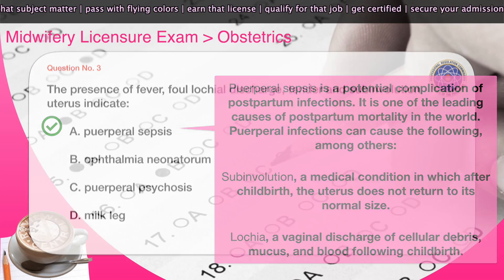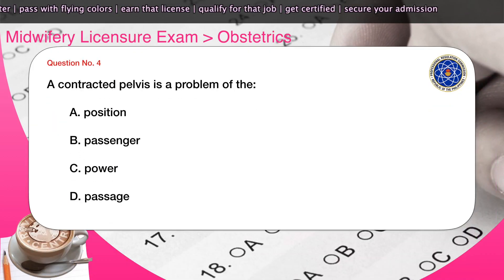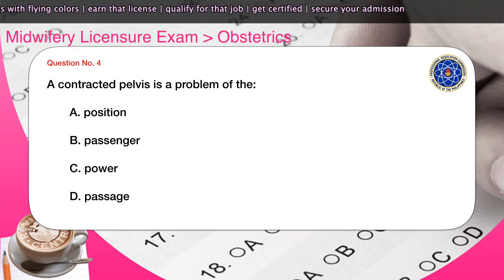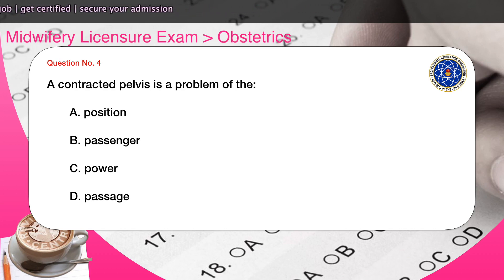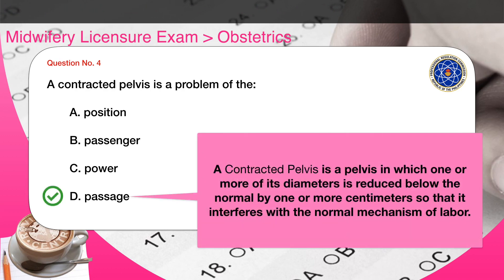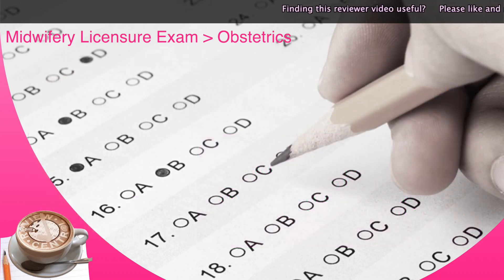Question number four: A contracted pelvis is a problem of the — A) position, B) passenger, C) power, D) passage. The correct answer is D. A contracted pelvis is a pelvis in which one or more of its diameters is reduced below the normal by one or more centimeters, so that it interferes with the normal mechanism of labor.